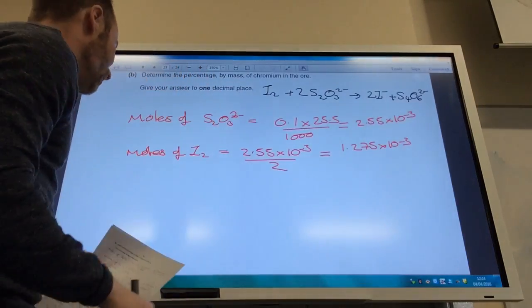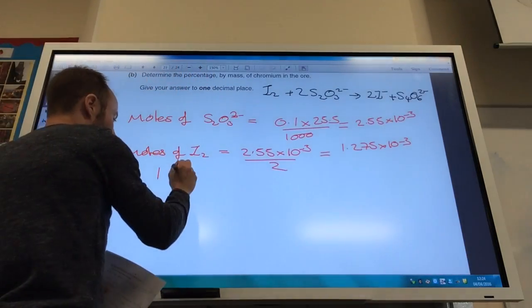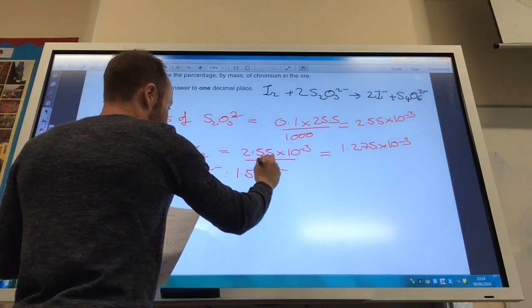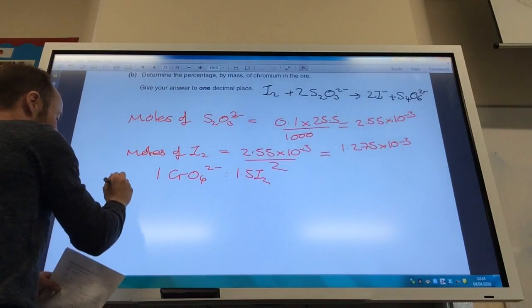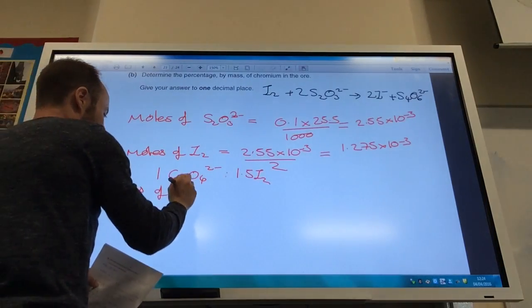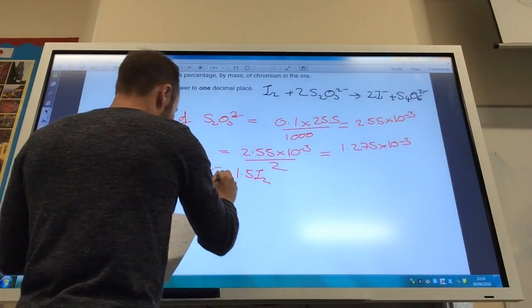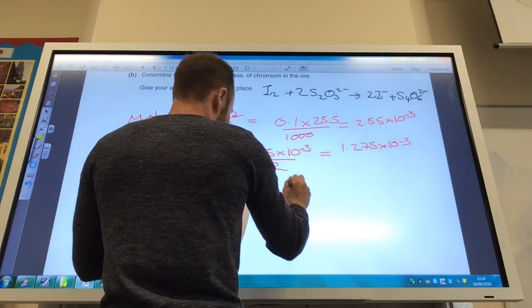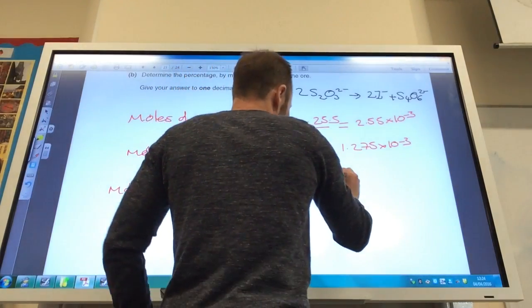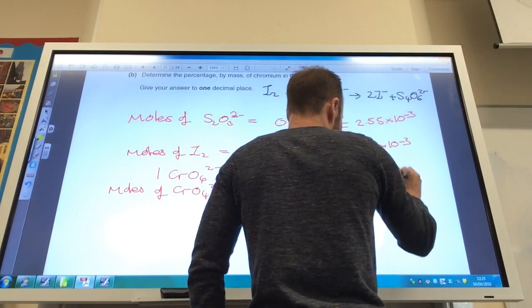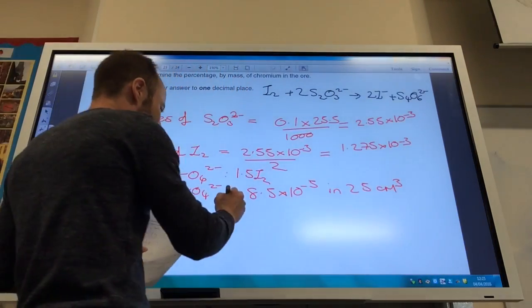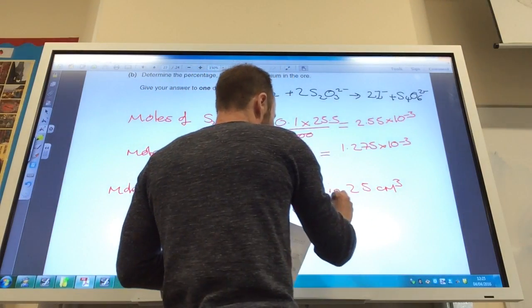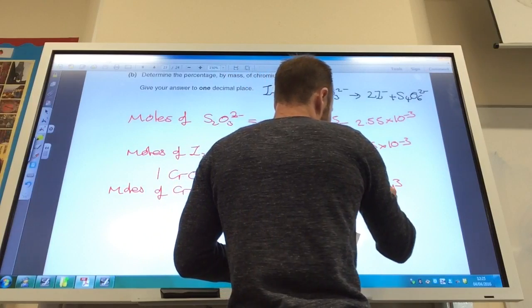Now you've got to relate that to chromium and it's told you that 1 CrO4 2- is equivalent to 1.5 I2 so if you do that now moles of CrO4 2- is going to equal 8.5 times 10 to the minus 4. But that was in 25 centimetres cubed you had it in 1 decimetre cubed originally so that is 0.034 moles in 1 decimetre cubed.